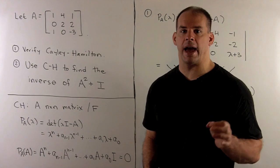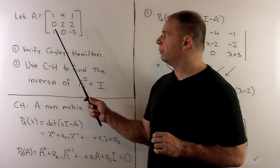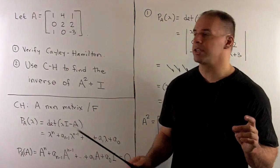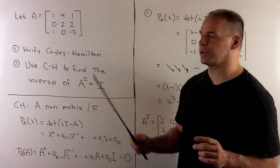Let's work out an example of the Cayley-Hamilton theorem. So, I'll let A be equal to the real 3 by 3 matrix: 1, 4, 1, 0, 2, 2, 1, 0, minus 3.